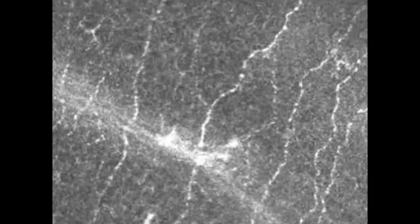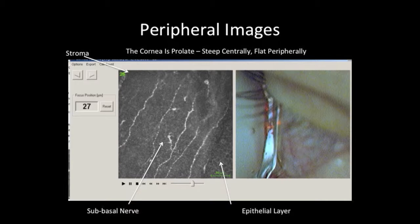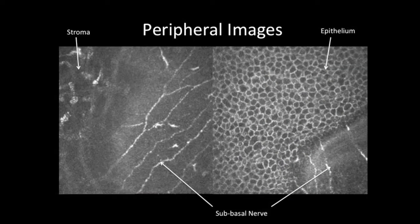Even in a compliant patient, there's still residual eye motion. Here we have a very high quality confocal sequence image, and you can see that it's still affected by motion artifact. The cornea is not perfectly spherical in shape, and because confocal microscopy requires applanation, as you move to the periphery, variable compression is applied leading to images that are at different corneal depths, as is seen here.